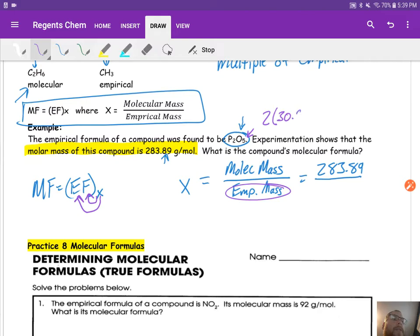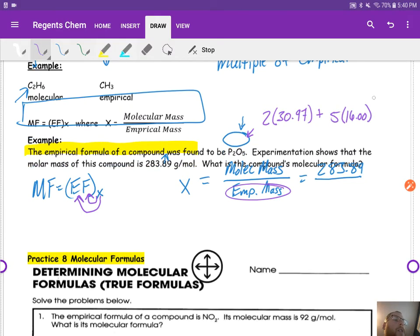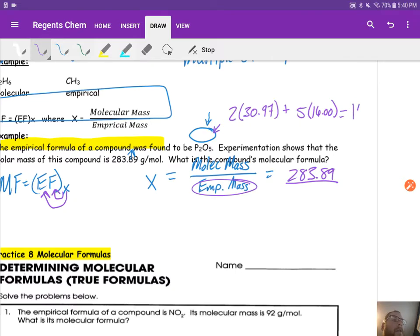So 2 times 30.97, because that's phosphorus, plus 5 times 16, and that's our oxygen component. So when we do that math, I'll rewrite this number, 283.89. When we do that math, we get an empirical mass of 141.94. So we can plug that in down here, 141.94.